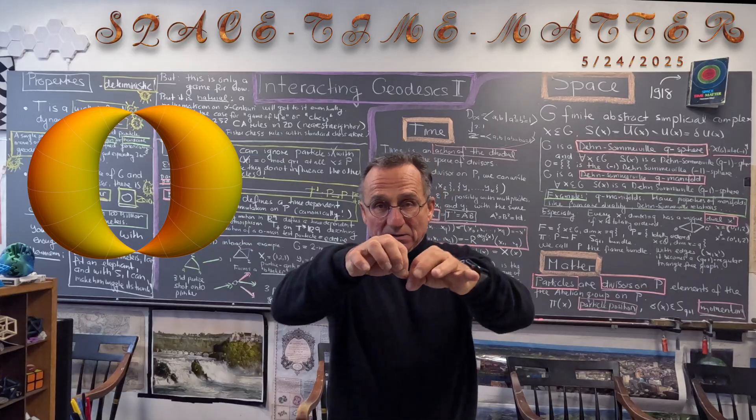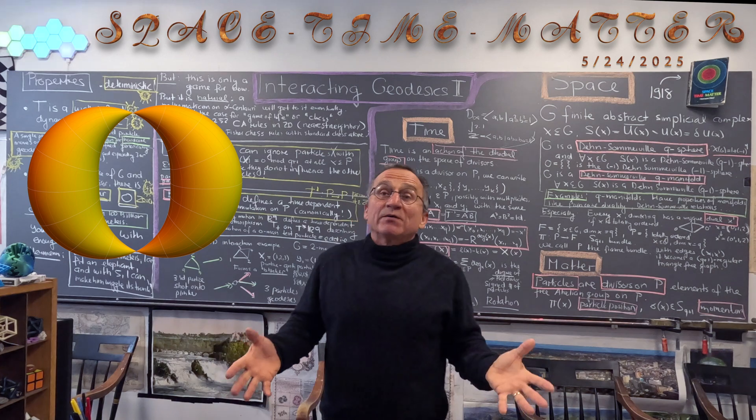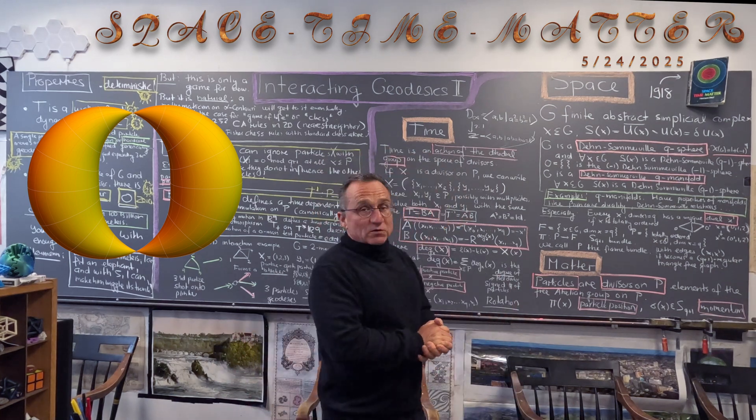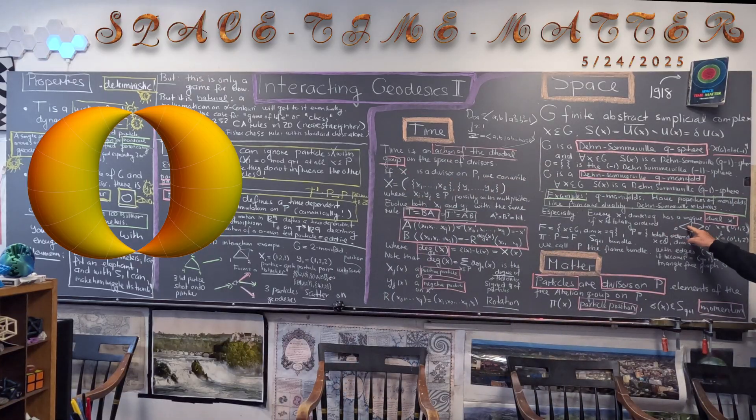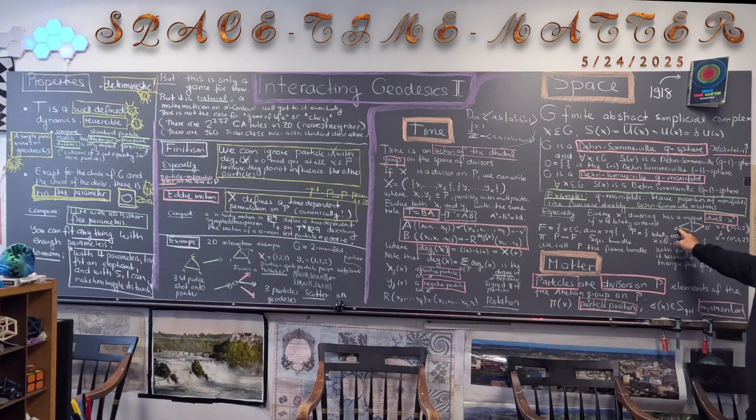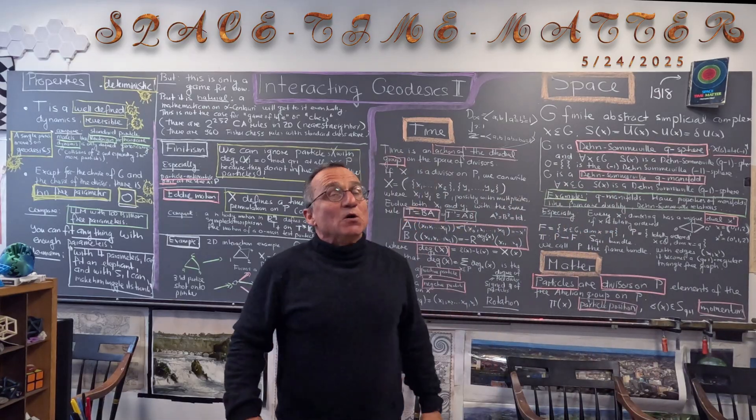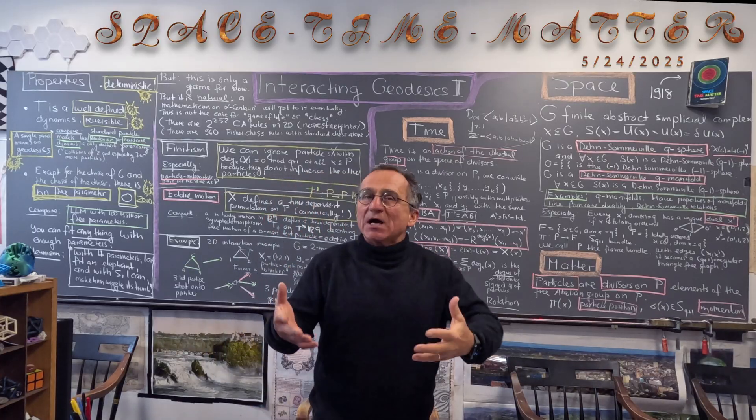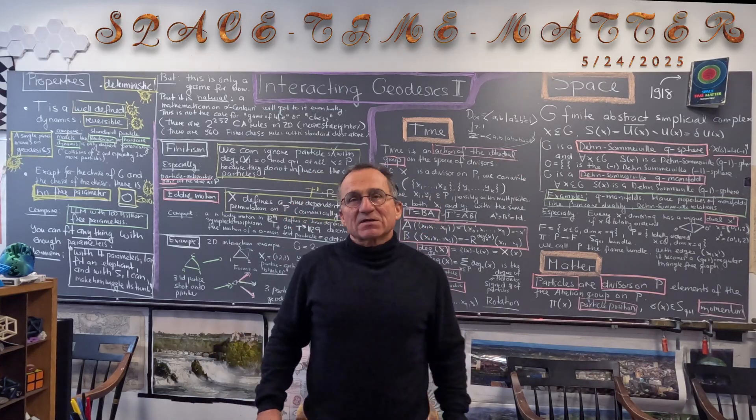You can take two spheres and glue them together at two points and you have this property. But what we want is just a geodesic motion and for that we just need that the maximal simplices have the property that every maximal simplex has a dual simplex once you order it. So we can reflect at the wall, at the Q-1 dimensional wall. That's an assumption which is very natural which happens for manifolds and it happens also for Dane Somerville spaces.